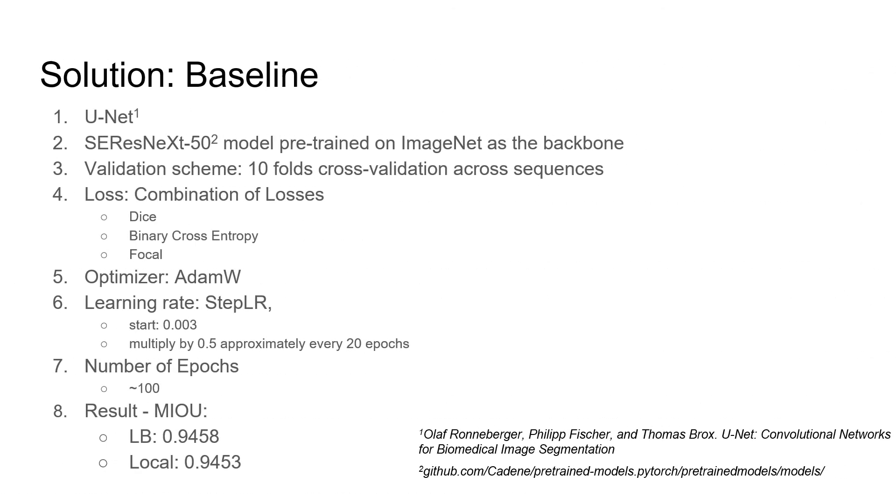For the baseline, we used U-Net architecture and took the SE-ResNeXt-50 pre-trained ImageNet model as its backbone. To evaluate our model, we used a 10-fold cross-validation across video sequence. We set Adam-W as the optimizer and for the loss we took a combination of focal, dice and binary cross-entropy losses with equal weights. Starting from 0.003, we updated the learning rate by multiplying it by 0.5 every 20 epochs, and trained our network approximately for 100 epochs.